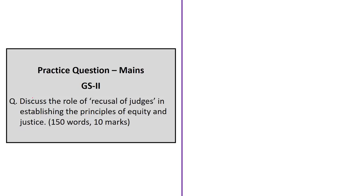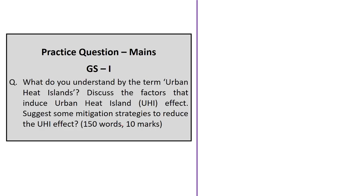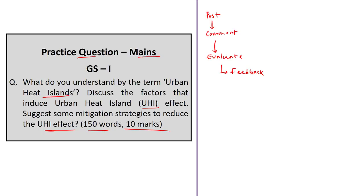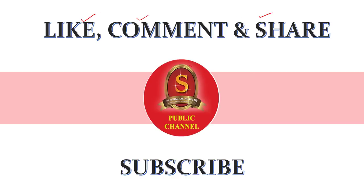For the practice mains questions: the first asks to discuss the role of recusal of judges in establishing the principles of equity and justice (10 marks, 150 words). The second asks to define urban heat islands, discuss the factors that induce urban heat island effect, and suggest mitigation strategies to reduce it (10 marks, 150 words). Viewers can post written answers in the comment section, where they will be evaluated and feedback provided within a reasonable time frame. Thank you for watching — please like, comment, share, and subscribe to Shankar IAS Academy's YouTube channel.